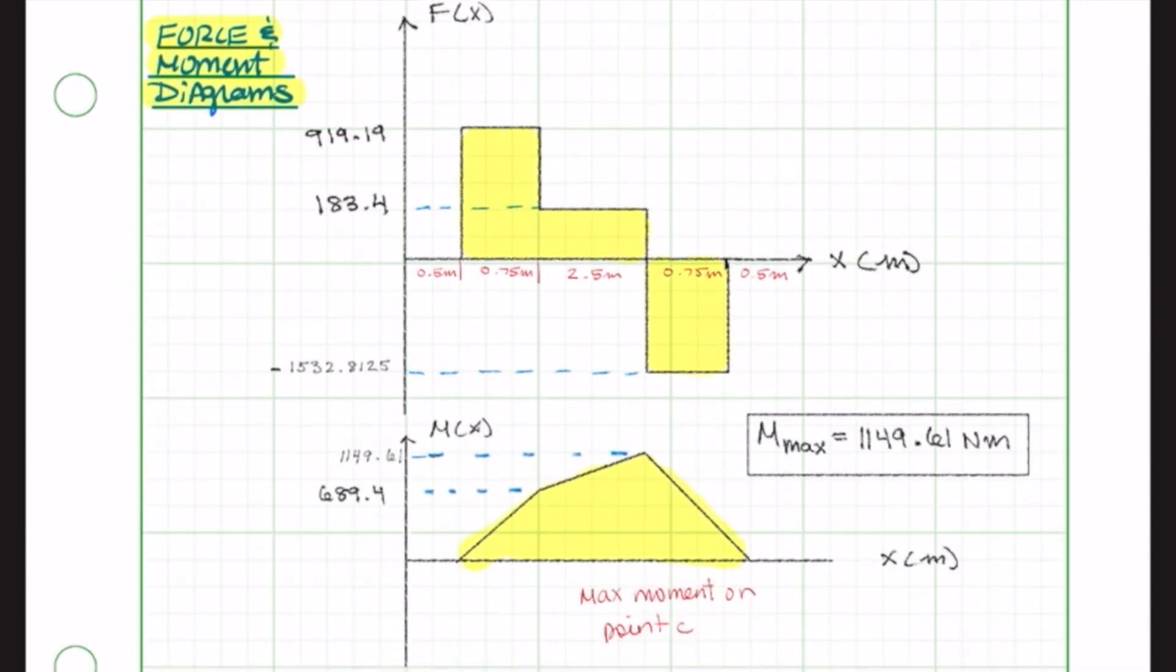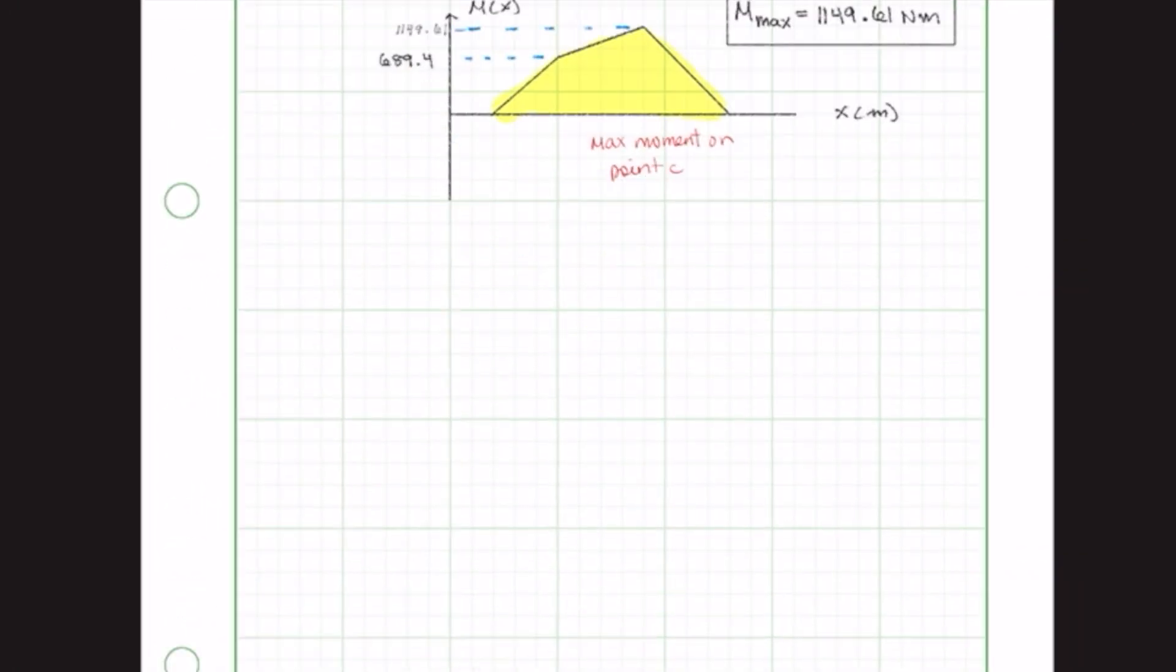We drew our force diagram to see how the forces are distributed along the skid, then did the same for our moment diagram, which let us know where our max moment is, which is at point C, from the above FBD.